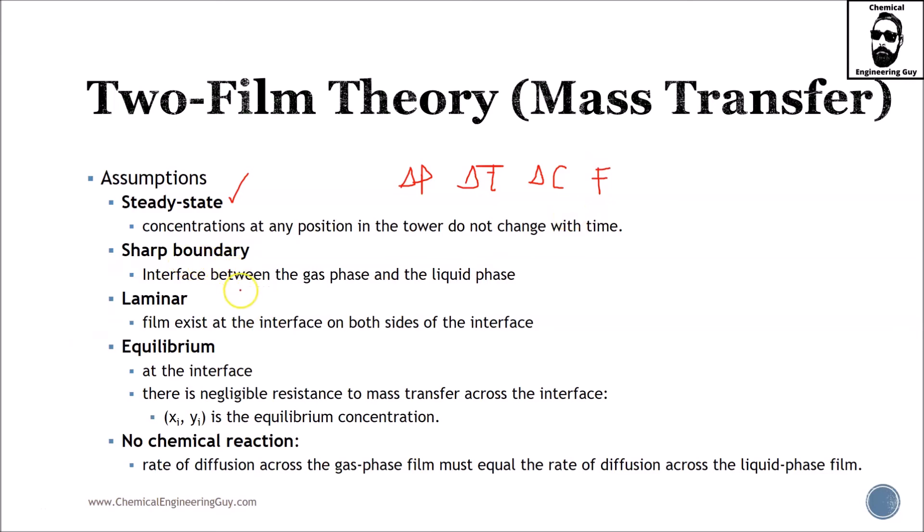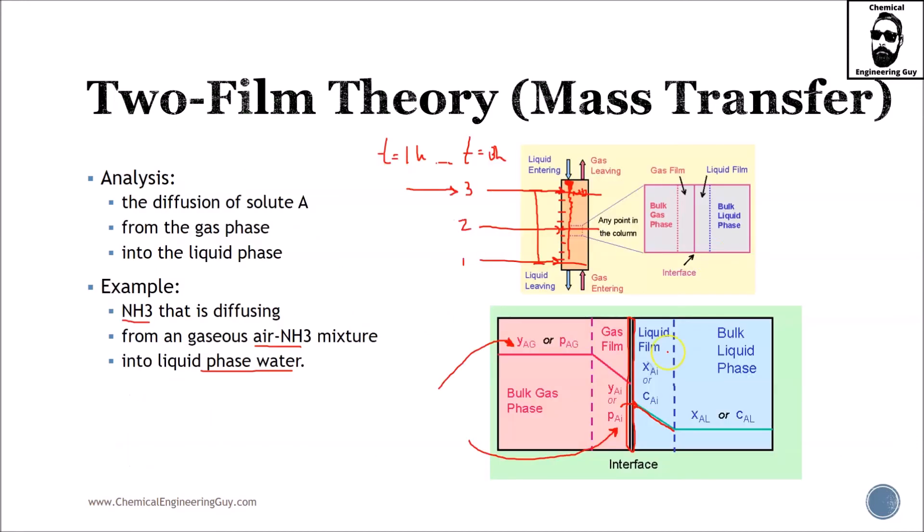Sharp boundary: the interface between the gas phase and the liquid phase must be an interface. Laminar implies that the film exists at the interface on both sides—the gas side and the liquid side. This will be the gas side and the liquid side.